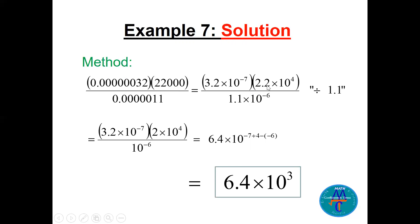Now cancel 2.2 and 1.1 — since 2.2 divided by 1.1 equals 2. Then multiply 2 by 3.2 to get 6.4. For the powers: minus 7 plus 4 in the numerator, and we subtract minus 6 from the denominator (which means adding 6). So minus 7 plus 4 plus 6 equals 3. Final answer: 6.4 times 10 to the power 3.